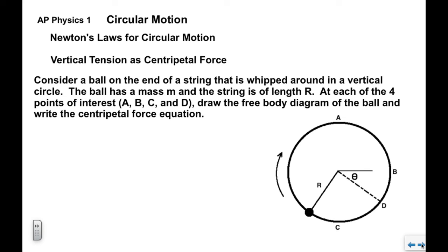Now we're going to look at vertical tension as a centripetal force. Consider a ball on the end of a string. We're going to whip it around in a vertical circle. The ball has a mass m and the string is of length r. At each of the four points of interest, a, b, c, and d, we're going to draw a free body diagram and write the centripetal force equation.